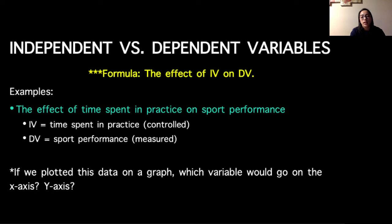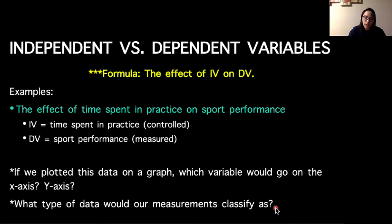Based on our previous slide, time spent in practice, however we're choosing to define that, would go on the x-axis, and the sport performance would go on the vertical or the y-axis. The other thing would be what type of data would our measurements classify as. In the first example, if we have time as a continuous scale and we're taking what people report, that would be an example of ratio data. If we were doing the example where we have three hours, six hours, and nine hours, those are mutually exclusive categories, so that would be an example of nominal data.